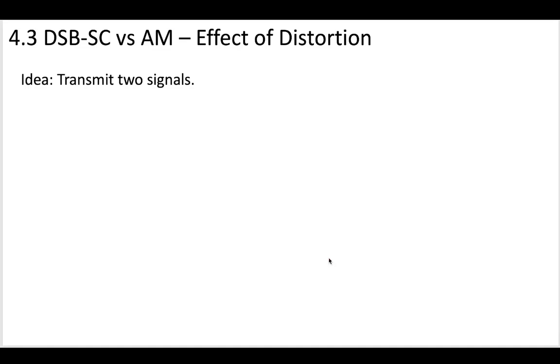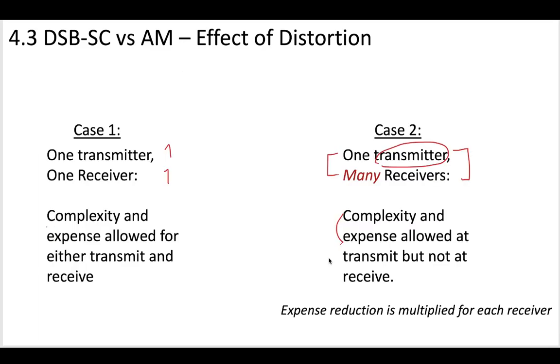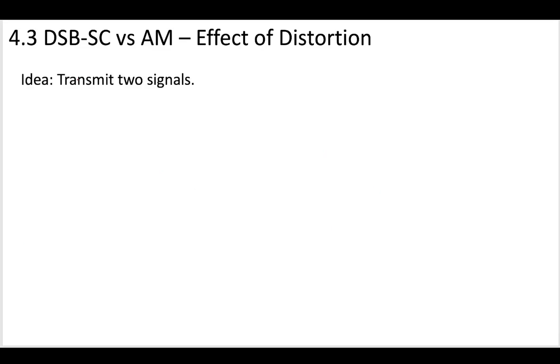Now, let's think about one more thing here with this DSB-SC, which is that if we could transmit two signals, we might be able to ease things up for us a little bit. So if we're going to go this route where we have one transmitter, but many receivers, we may want to add a little bit more complexity on one side than the other. And so that's what we're going to talk about in the next video is this idea that we could transmit two signals.